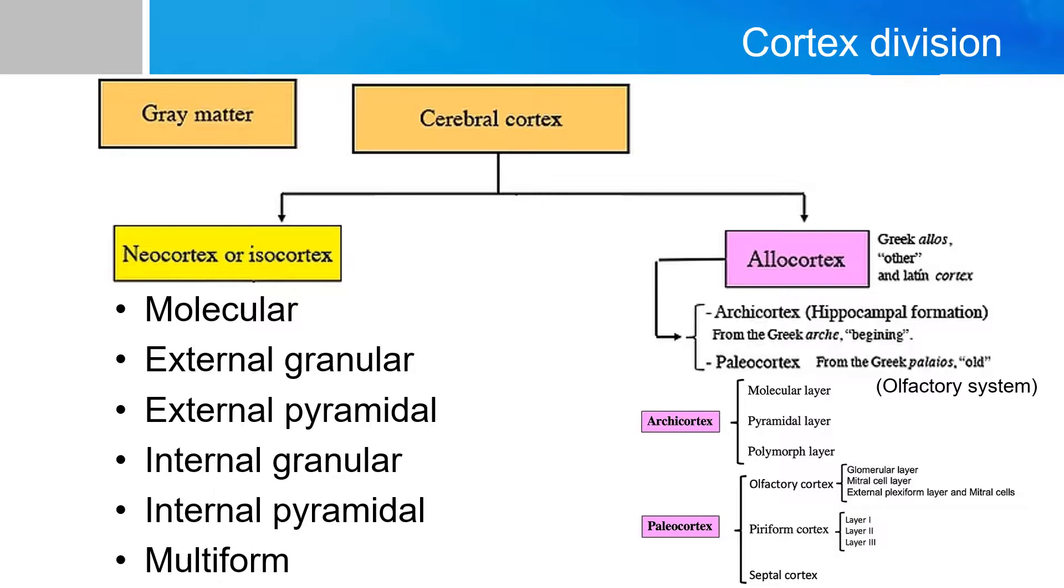The archicortex, archi is Greek for beginning, which is basically one of the first cortices that are formed, which is in modern human anatomy, includes the hippocampal formation and important for memory. And the second class is the paleocortex. Paleo is Greek for old cortex. And this is largely comprised of the olfactory system.